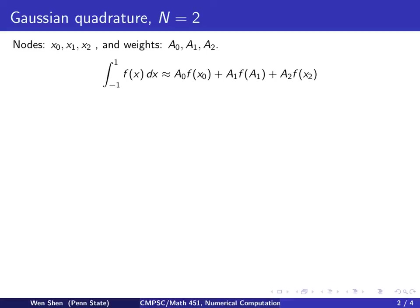So this means we will have three nodes, and we denote them by x0, x1, x2, and three associated weights.